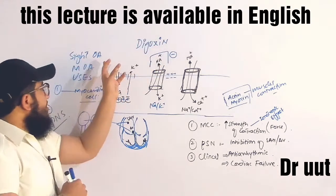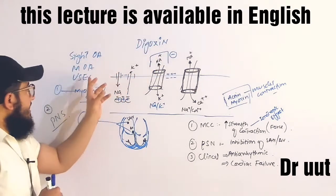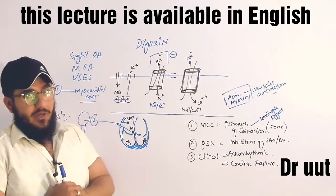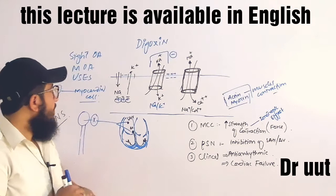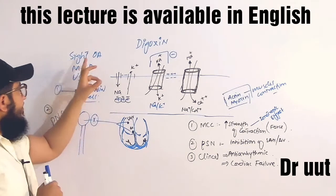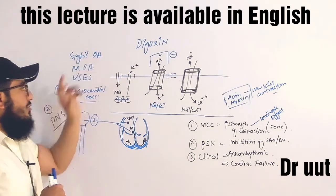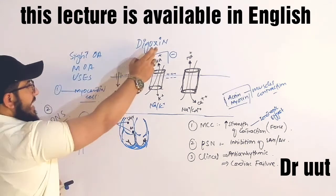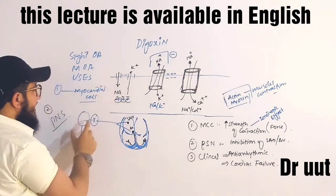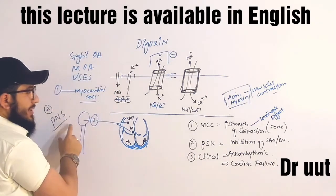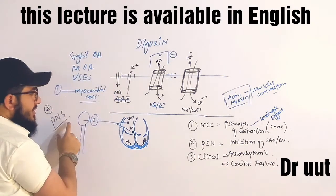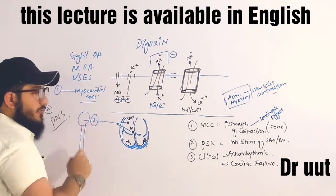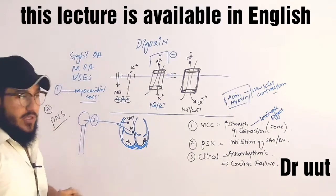Digoxin's site of action: we have two sites — myocardial cells, and the parasympathetic nervous system, specifically the vagus nerve. We will also cover the mechanism of action and uses.